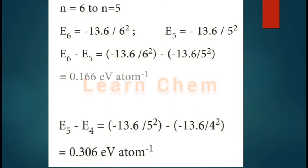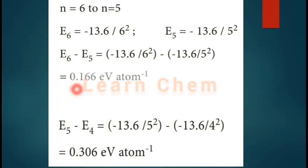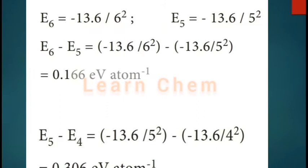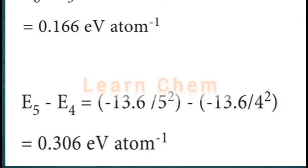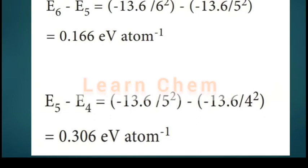For the 6→5 transition: E₆ = −13.6/6² and E₅ = −13.6/5². The energy difference gives 0.166 eV. For the 5→4 transition: E₅ = −13.6/5² and E₄ = −13.6/4², giving 0.306 eV. Since 0.166 < 0.306, the least energetic photon corresponds to the 6→5 transition (E₆ − E₅).